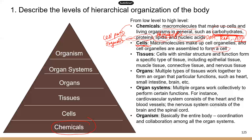Cells with similar structures and functions can form a specific type of tissue. We have four major types of tissues. First, epithelial tissue — it can be found in the inner lining of different organs or tracts, and also on the surface of the body as the superficial layer of the skin.